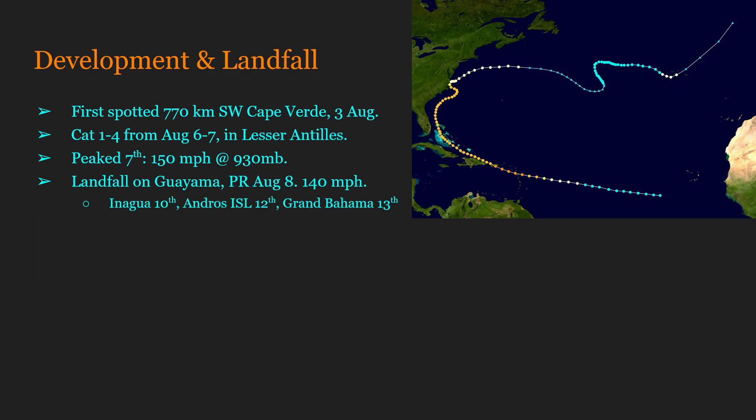The San Ciriaco hurricane would make landfall on Guayama, Puerto Rico, on August 8th, with wind speeds of 140 miles per hour.